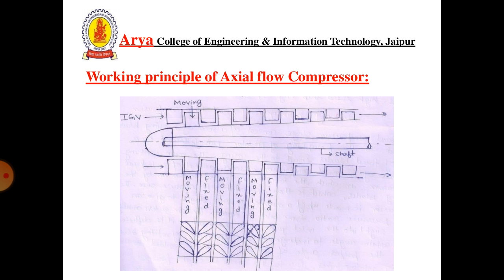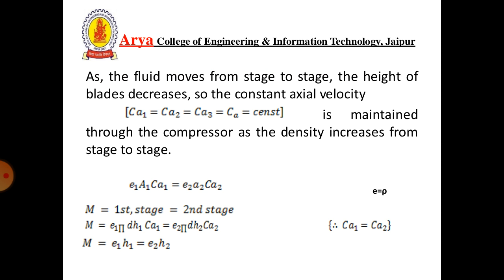The pressure increases from stage to stage. As the fluid moves from stage to stage, the height of the blades decreases, so the constant axial velocity Ca1 = Ca2 = Ca3 remains constant. Here, 1 is at inlet and 2 at outlet of the rotor blades. Ca3 is the inlet to the stator blades, where Ca is the axial velocity. The axial velocity is maintained through the compressor as density increases from stage to stage — this follows from the continuity equation.